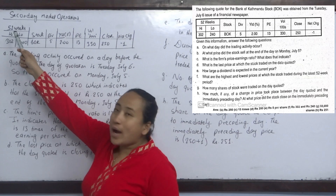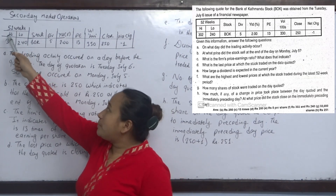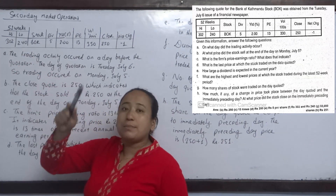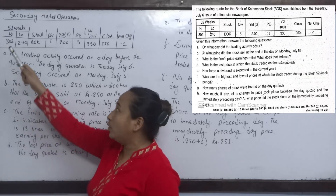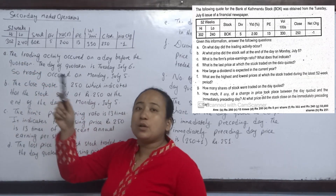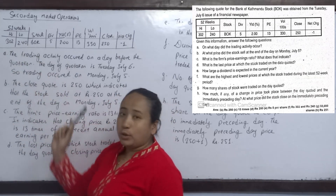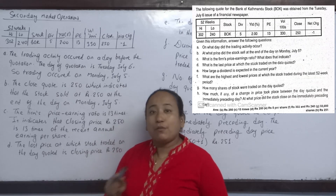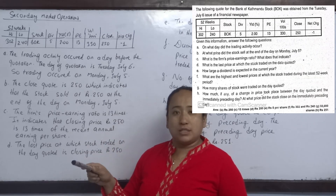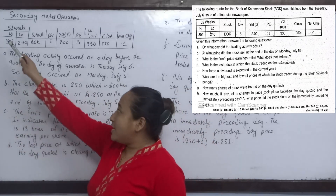What does it indicate? 1 year is the highest trading price. Stock market price is highest: 302. And lowest market price is 240. These indicate 52 weeks. This is the highest trading price.